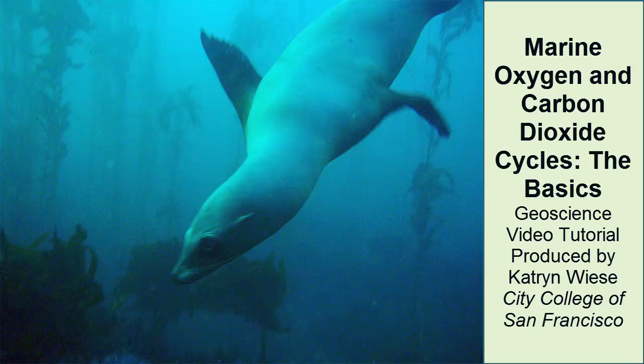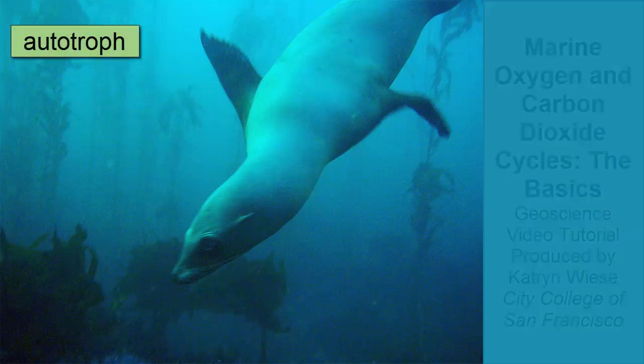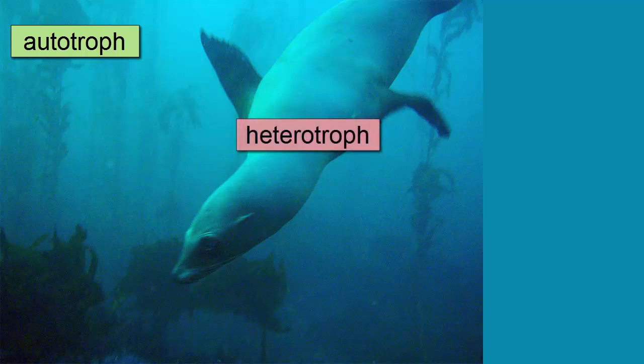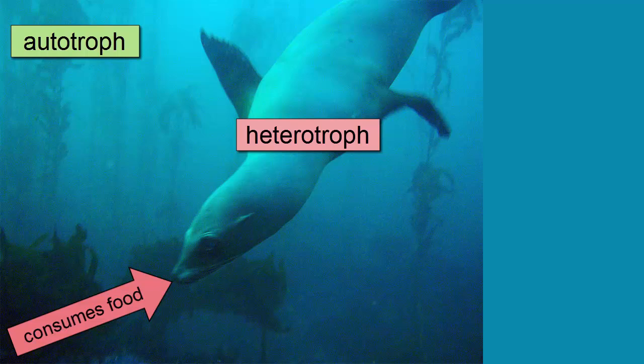All life can be separated into autotrophs and heterotrophs. Heterotrophs acquire their food by eating other organisms. Autotrophs make their own food, usually through a process called photosynthesis.